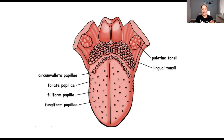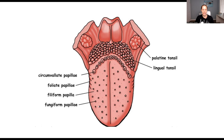Those are the main ones you have to know. So just to recap: the fungiform papilla is closer to the anterior, off to the sides a little bit. The filiform papilla is off to the sides, closer to the middle. The foliate papilla is on the side of the tongue. And the circumvallate papilla is at the back, more posterior.